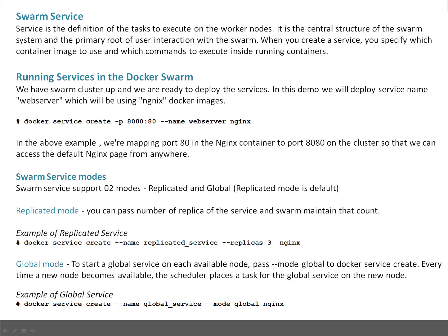A service is the definition of the task to execute on the worker nodes. It is the central structure of the Swarm system and the primary root of user interaction with the Swarm. When you create a service, you specify which particular container image to use, which command to be executed inside the running containers, which port to be exposed, what the replica or instance count will be, what the resource definitions are like how much CPU and RAM you want to allocate, and what the disk or directory mapping will be — everything you specify in the service definitions.